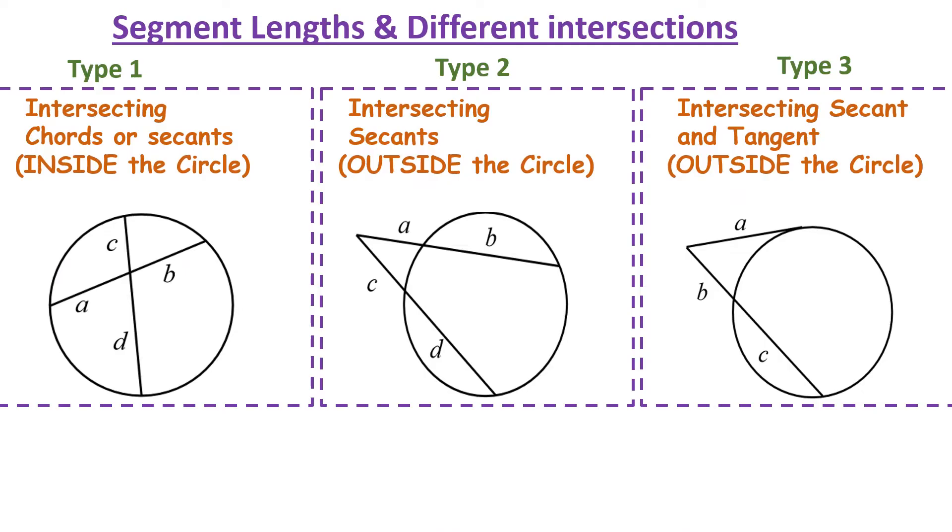We have three different types of intersections. The first one is an intersecting chord or secant inside of the circle. And the formula that we use is A times B equals C times D. If it's on the same line, you're multiplying those two values, and then it equals the other two values on the other line.